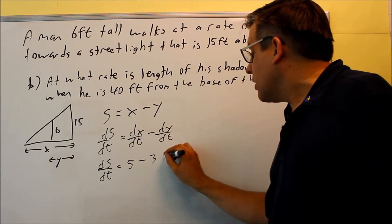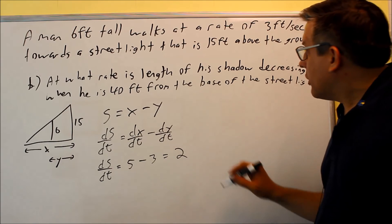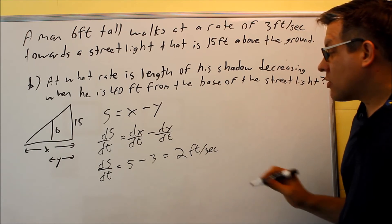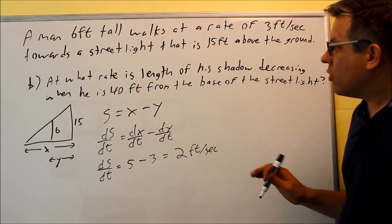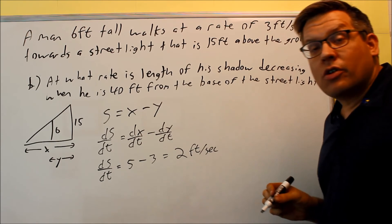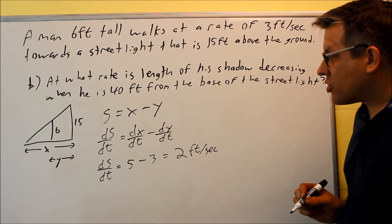So 5 minus 3 will give 2, and that's also going to be in terms of feet per second. So that's going to be your answer. So that would be the rate at which the shadow is decreasing. It's decreasing at a rate of 2 feet per second.